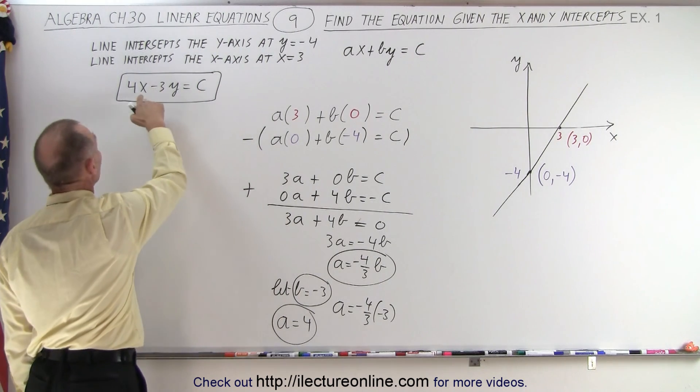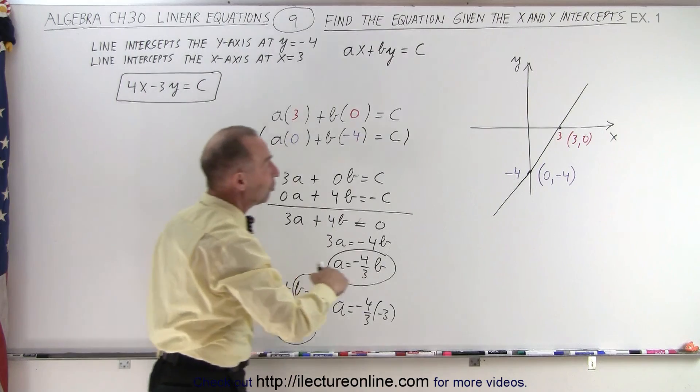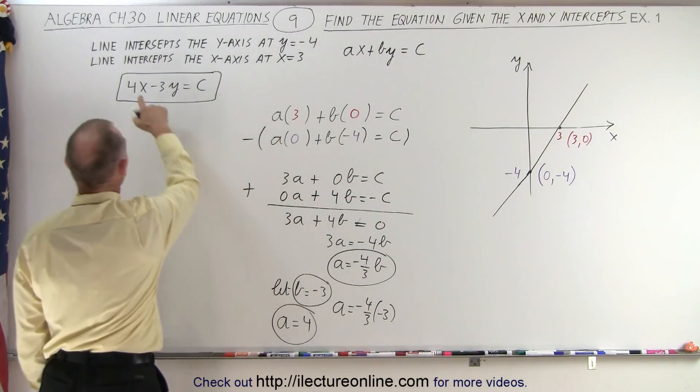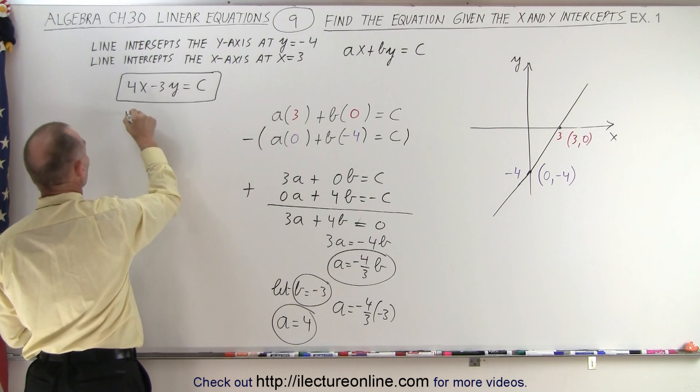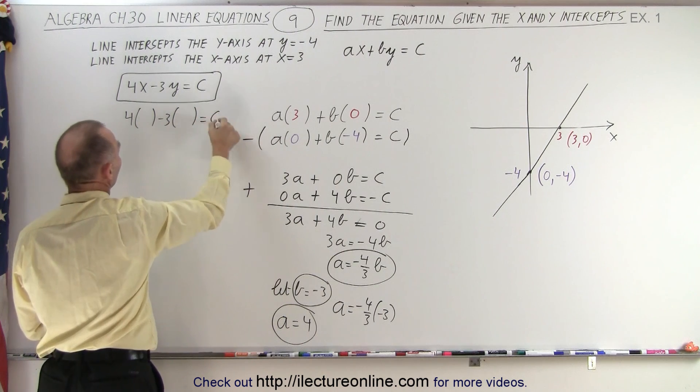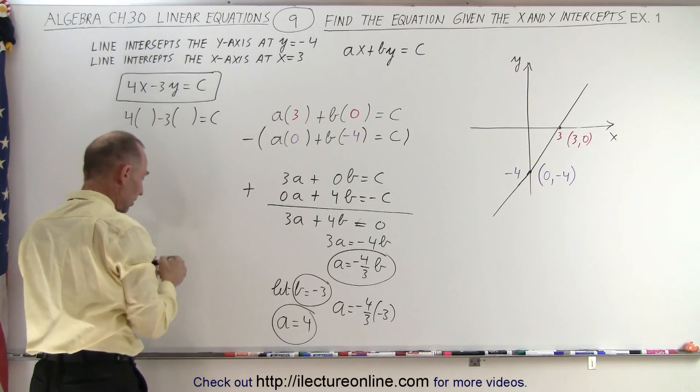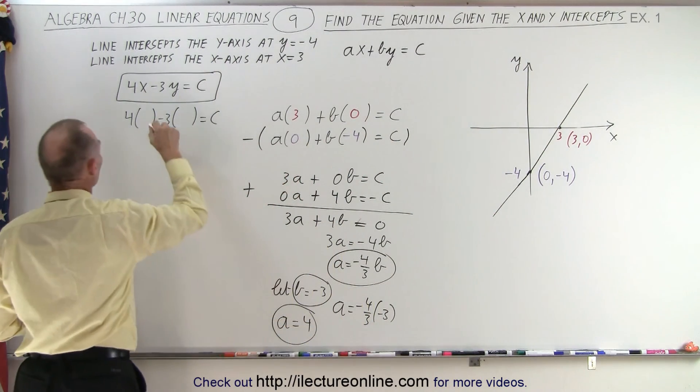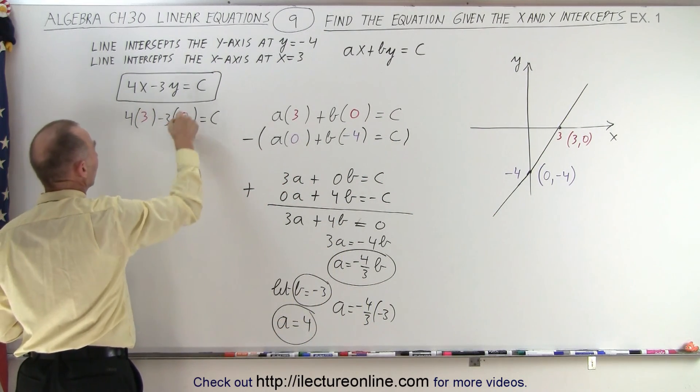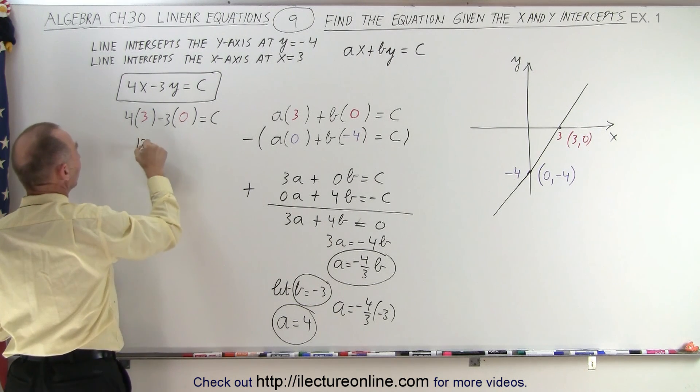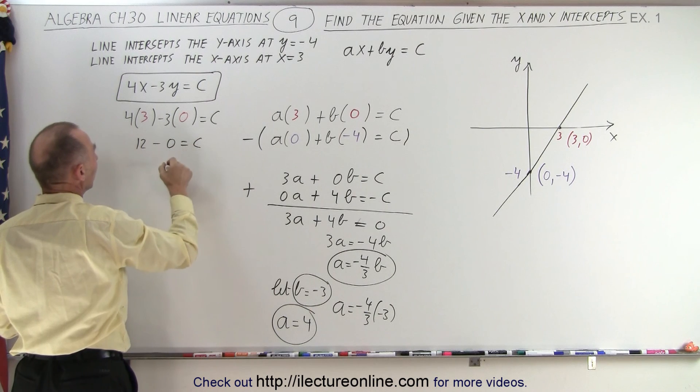I can do so again by plugging in one more point. One of these two points. Let's plug in this point right here. So, I end up with 4 times x minus 3 times y equals c. I need an x and a y value. And my x and y value right here, we know that's on the line. So, plug in a 3 and we'll plug in a 0. So, I end up with 12 minus 0 equals c or 12 equals c.